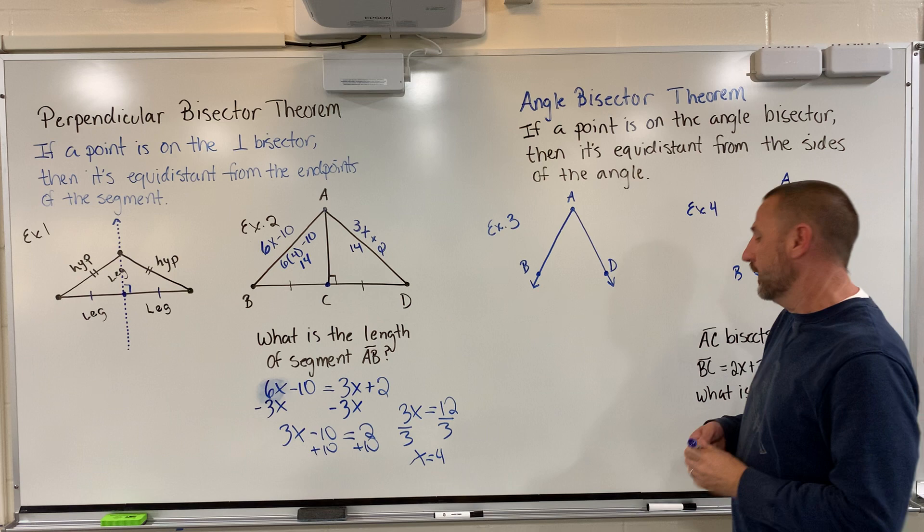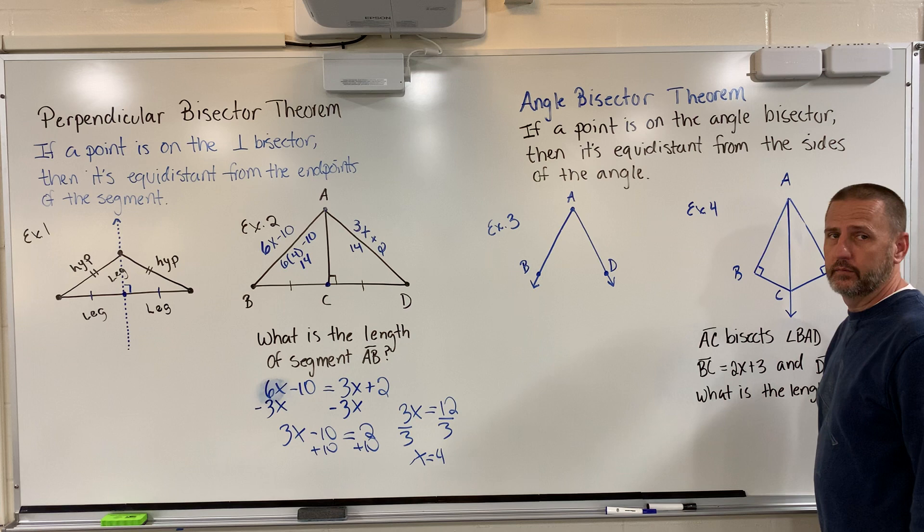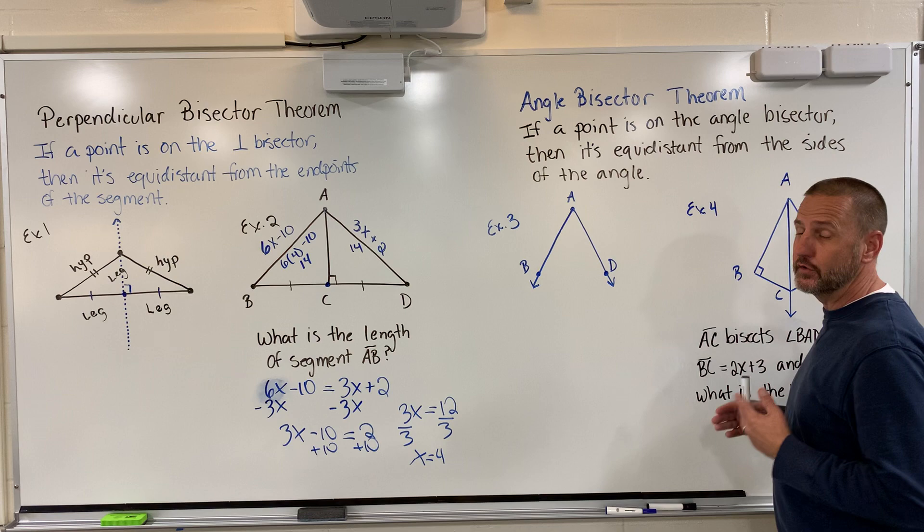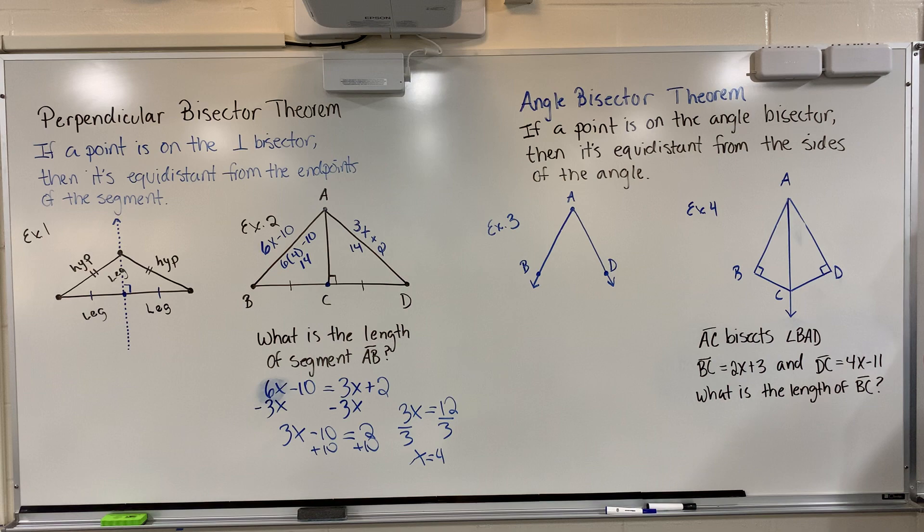The next theorem that we're going to look at is called an angle bisector theorem. In this case, instead of bisecting a segment, we're going to bisect an angle, which means we're going to take an angle and run a segment right down the middle of it so that it divides it into two equal or congruent angles. The theorem says, if a point is on the angle bisector, then it's equidistant from the sides of the angle. These are the sides that are forming that angle.